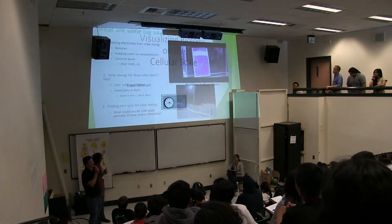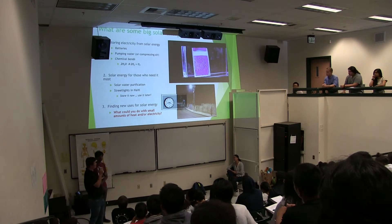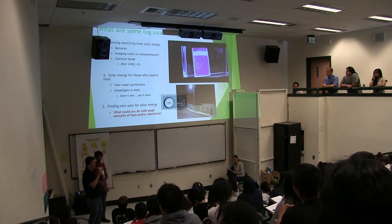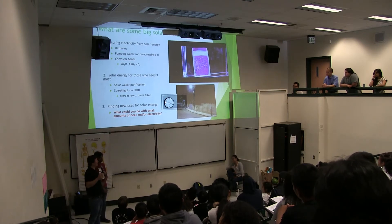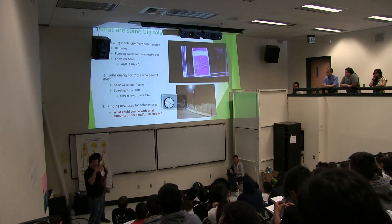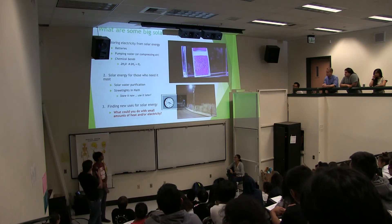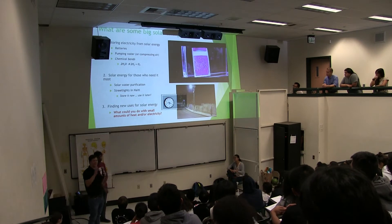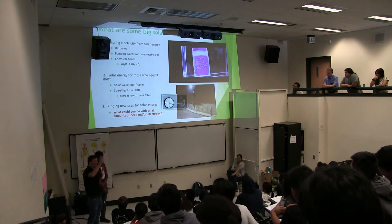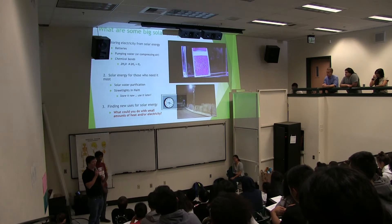What it shows is they shine light from a lamp meant to simulate sunlight onto this solar cell, and it generates electricity in the solar cell. It does a chemical reaction - water to hydrogen and oxygen. On one side you have hydrogen bubbles coming off, and on the other side you have oxygen bubbles coming off.